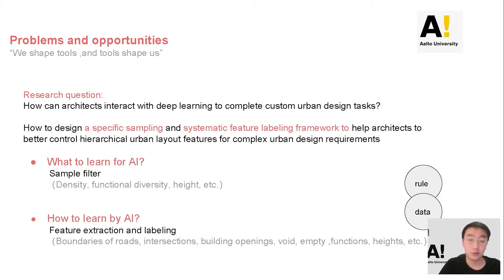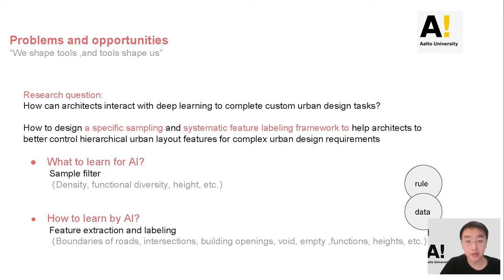We addressed two fundamental questions. What to learn for AI? We need to test what kind of design cases to learn, what features these cases should learn — their height, functions, density, and so on. What to learn by AI? We need to consider which urban layout features are in line with our needs in the architecture or urban design process — what features to extract and label, such as boundary of rows, intersections, building openings, and so on.